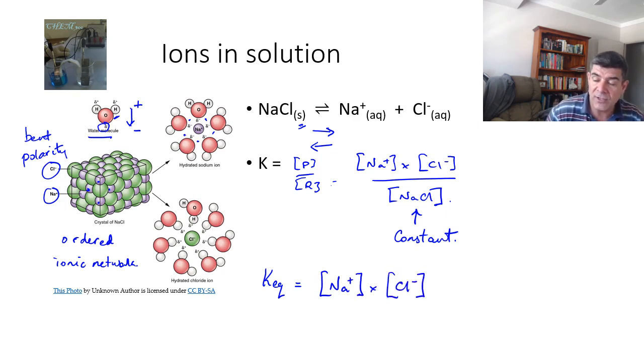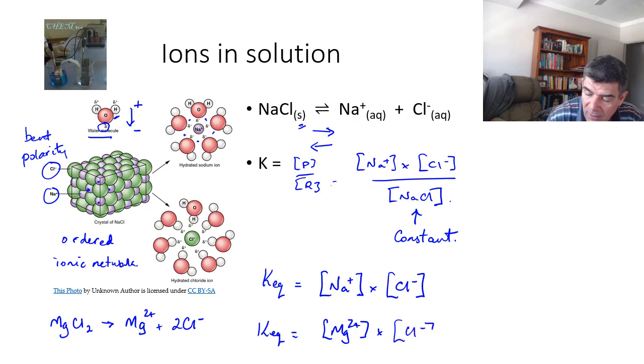Now, this will change, of course, if instead of sodium chloride, I used magnesium chloride, which is MgCl2. Then when I'm doing my ionization or dissociation reactions, I'm going to have twice the concentration of the chloride ions. And therefore, my equilibrium constant is going to be magnesium concentration multiplied by chloride ion concentration raised to the power of 2.